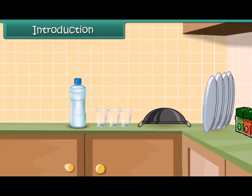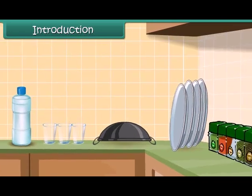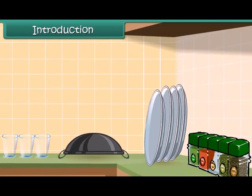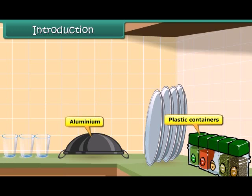Your kitchen shelves must be neatly arranged with rows of food containers, mostly made up of plastics. Plastics have taken so much prominence in our lives, now that we have replaced materials like aluminium, iron, steel and glass with plastics.